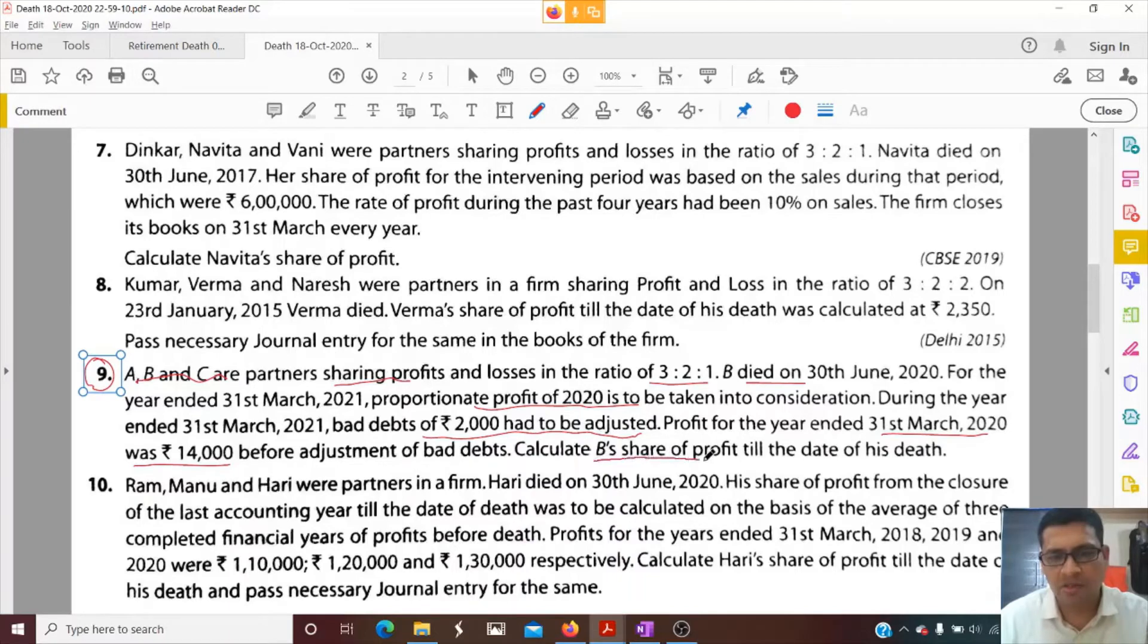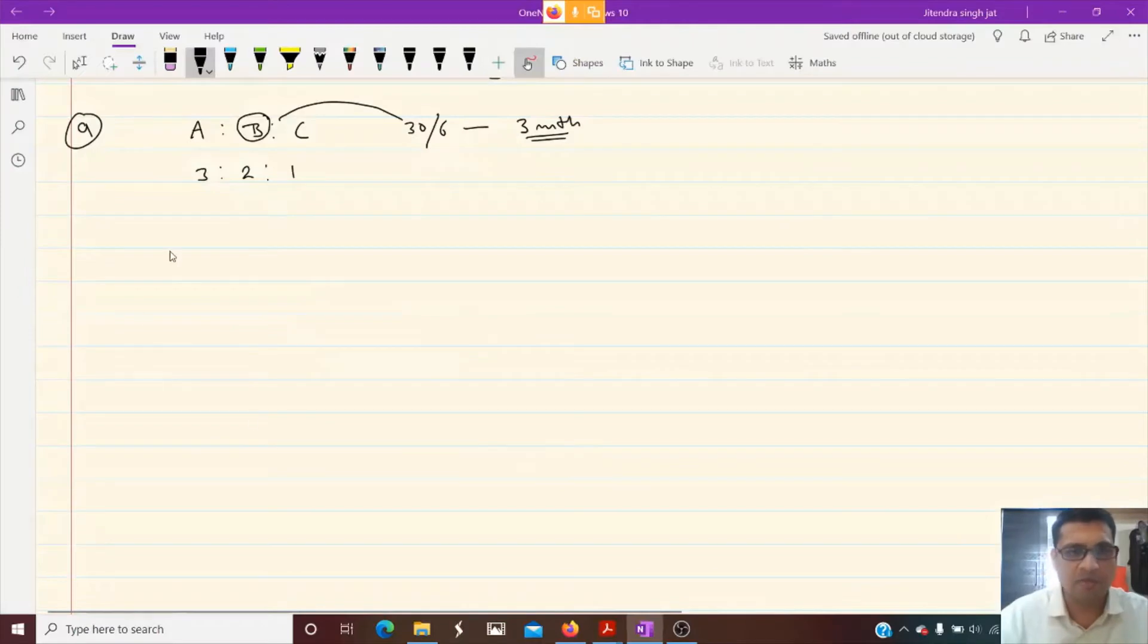Calculate B's share of profit till the date of his death. So the profit which we need to consider is of previous year and that is given 14,000. And out of this profit, we need to adjust one item which has not been adjusted earlier. That is bad debt. How much bad debt we need to adjust? 2000.